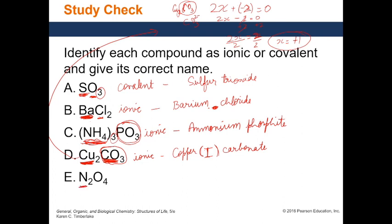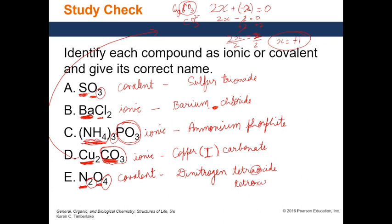For N2O4: the first element is nitrogen, a non-metal — so this is a covalent compound. To name it: nitrogen, how many? Two — 'dinitrogen'. Oxygen becomes 'oxide', how many? Four — prefix is 'tetra', giving 'tetraoxide'. Note: when two vowels come together, like the 'a' in 'tetra' and the 'o' in 'oxide', drop the 'a'. So the name is 'dinitrogen tetroxide'.